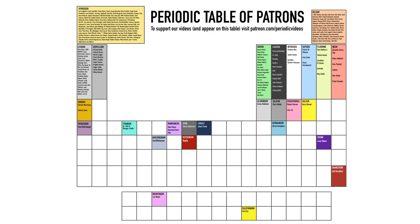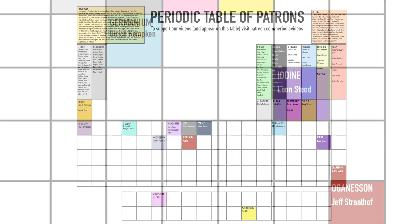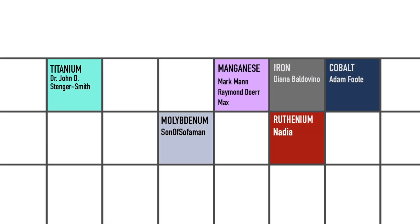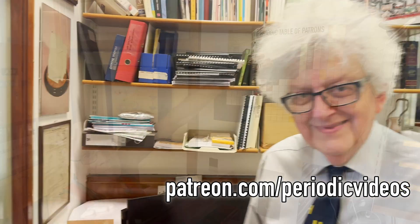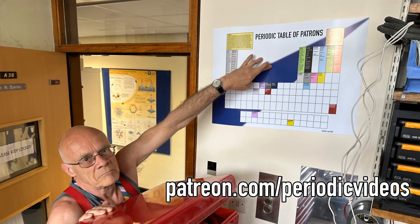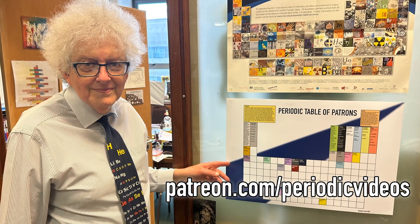You can support Periodic Videos on Patreon. Your name could appear on our periodic table of patrons, which now hangs in the Professor's office and Neil's lab. In fact, you could be our first Gallium supporter. No one's picked that one yet.